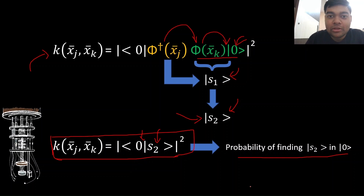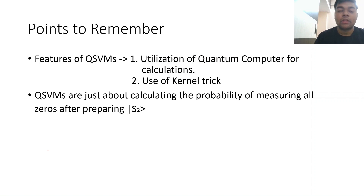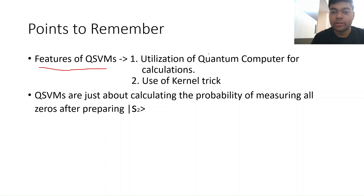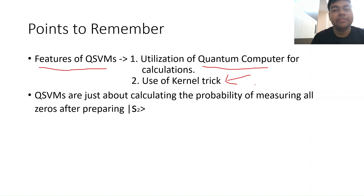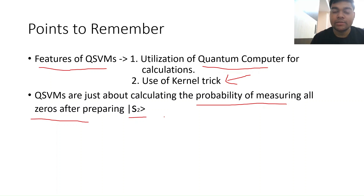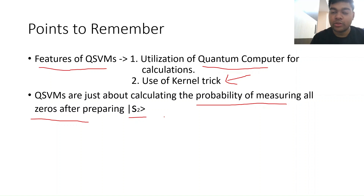I hope I was able to give you a good understanding of quantum support vector machines. Let's quickly revise what we've learned. The first part was the features of QSVM: first, utilizing a quantum computer for calculations by running quantum circuits; second, the use of the kernel trick. And what are QSVMs themselves? It is just the probability of measuring all zeros after you prepare state s2. You prepare s2 by executing circuit Phi and then circuit Phi-dagger, then measure the probability of finding all zeros. That's what QSVMs are.